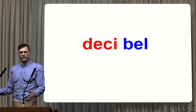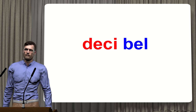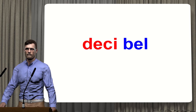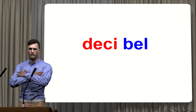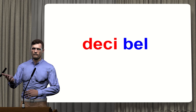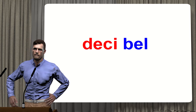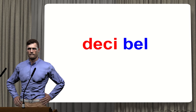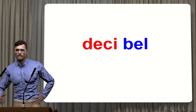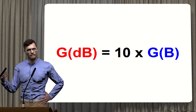Now that we have remembered what the logarithmic function is — its ability to convert very large numbers into smaller ones and to transform multiplications into additions — we can move on to see what decibels are. The word decibel is made up of the prefix 'dec', which comes from Latin to express a tenth of something, and the word 'bell'. The decibel unit is therefore one tenth of a larger unit called the bell, so that one bell is equivalent to 10 decibels.